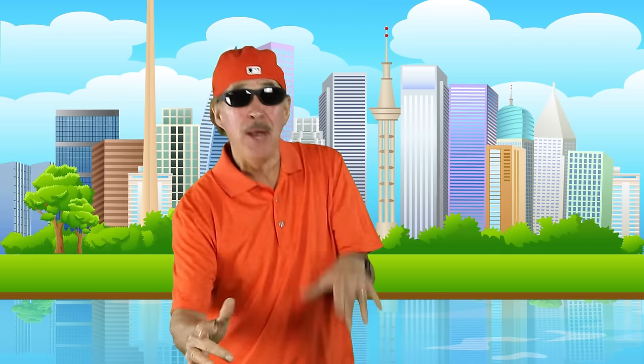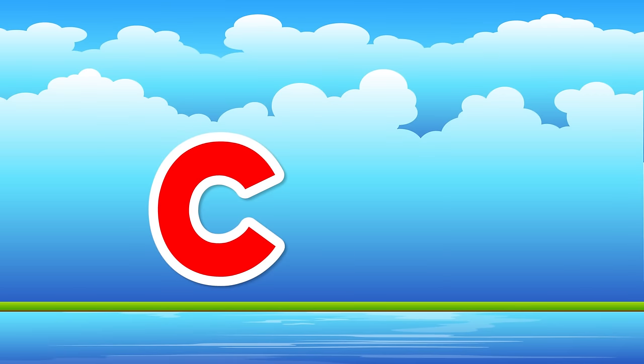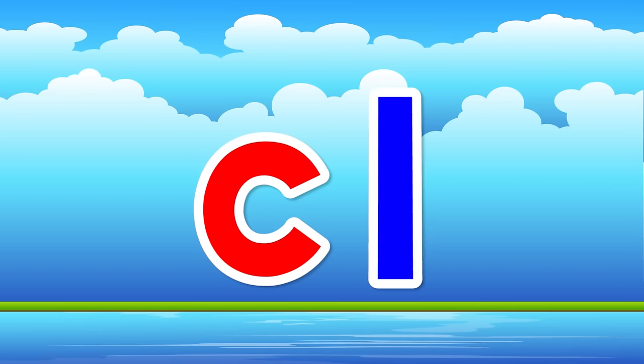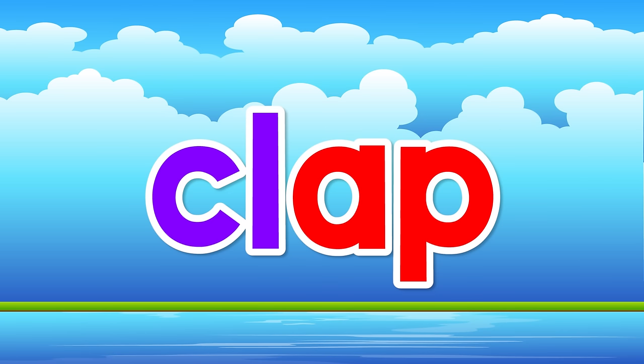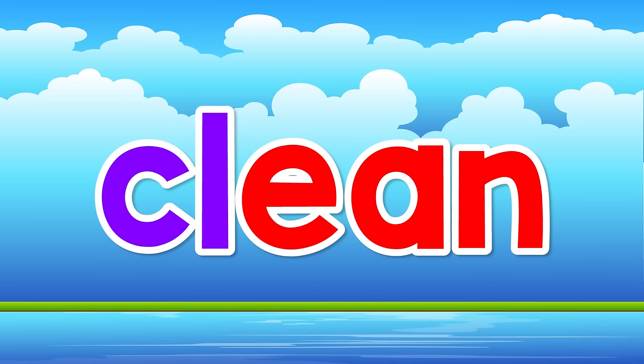A blend is two letters that begin words, but each letter's sound can be heard. Like C says k, L says l — blend them together and you get cl. Like in clap, class, climb, clean.